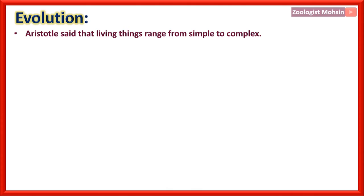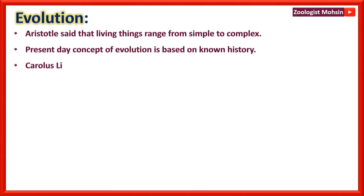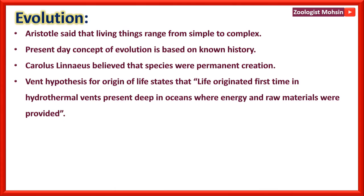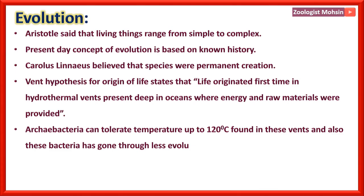Evolution: Aristotle said that living things range from simple to complex. Present day concept of evolution is based on known history. Carlos Linnaeus believed that species were permanent creations and do not change. The vent hypothesis for origin of life states that life originated first in hydrothermal vents deep in oceans where energy and raw materials were provided. Archaebacteria can tolerate temperatures up to 120 degrees centigrade and are found in these vents, having undergone less evolutionary change.